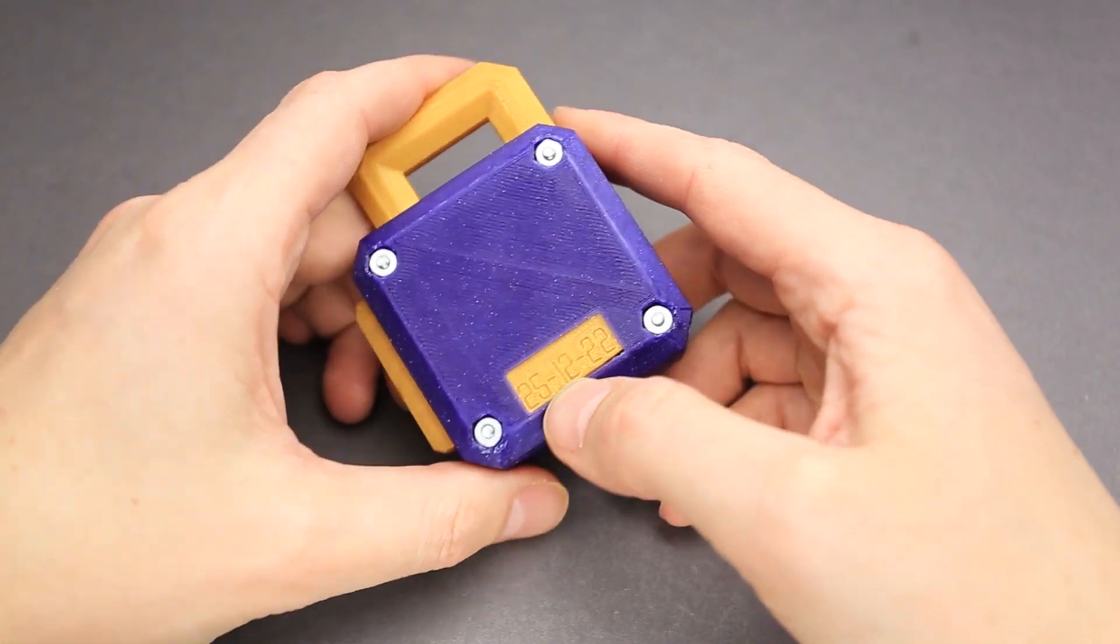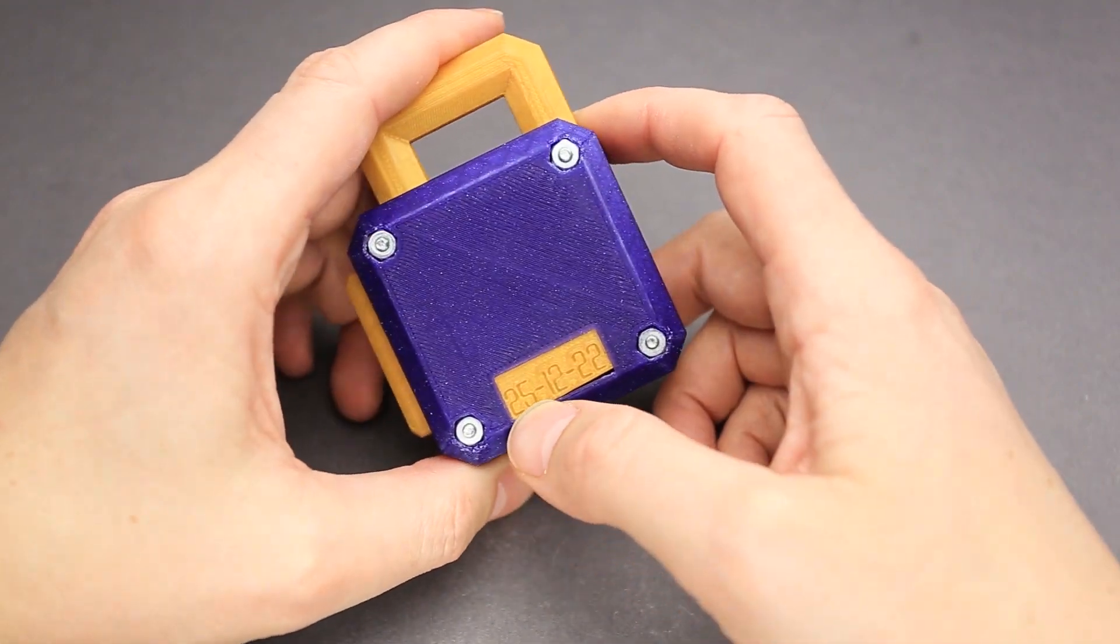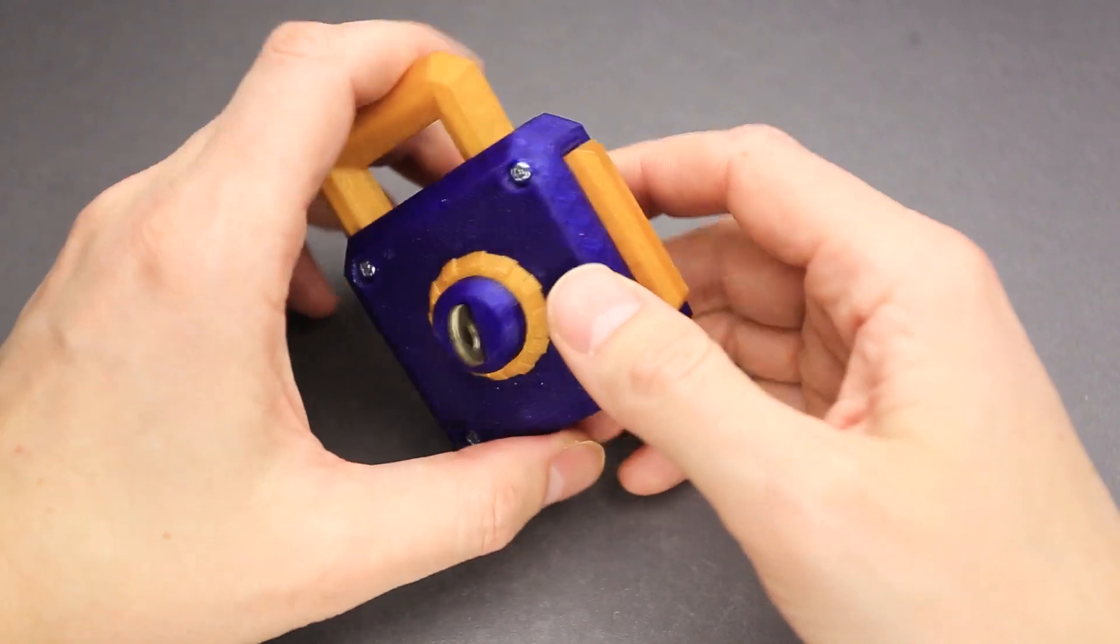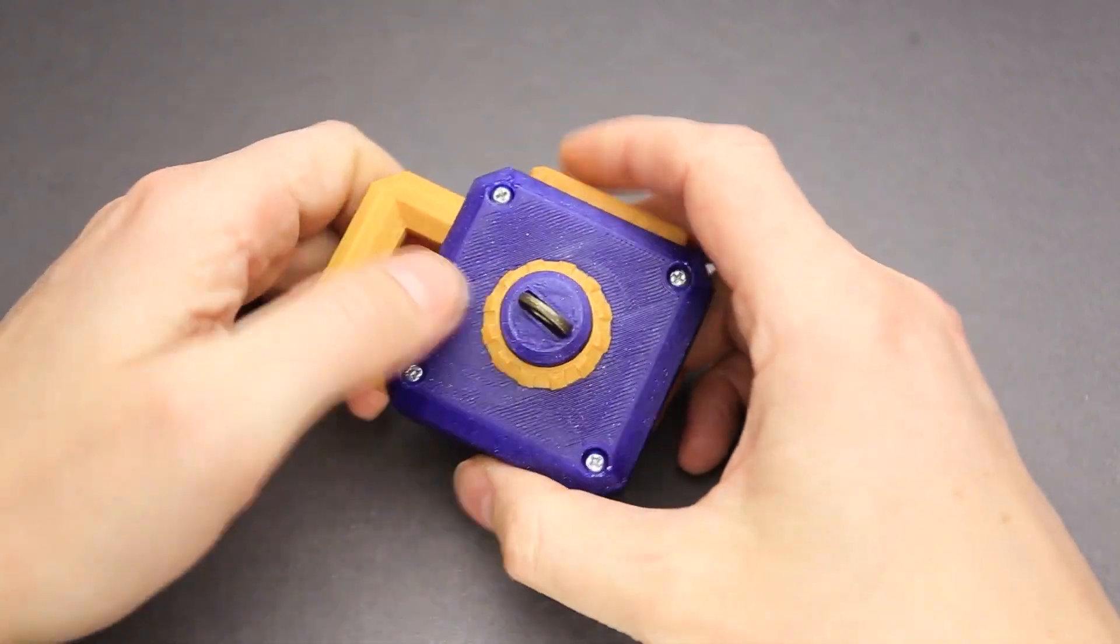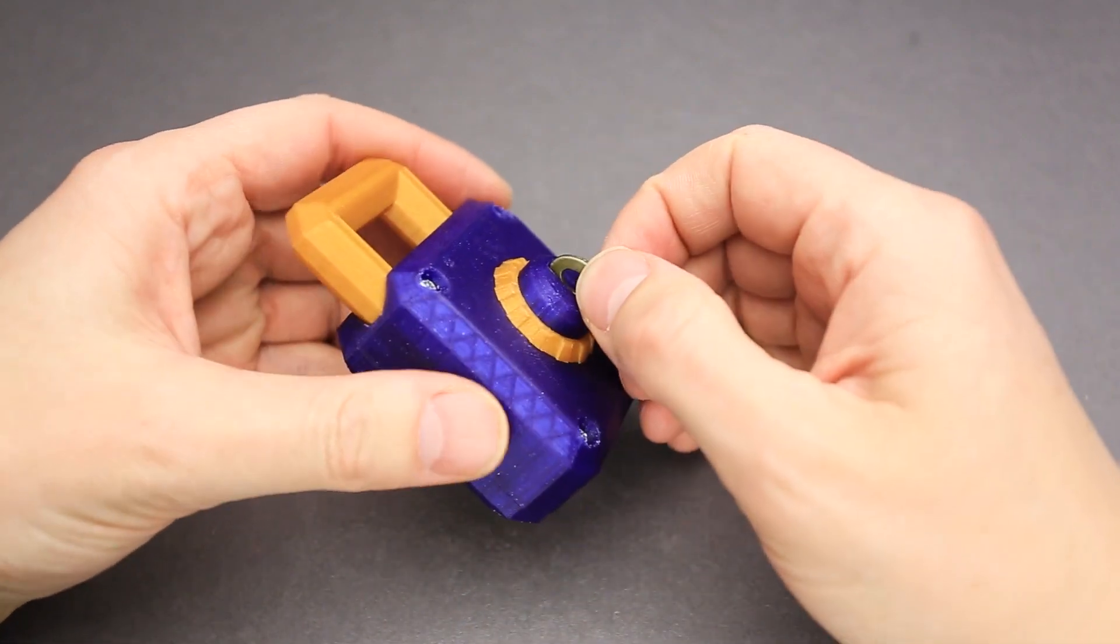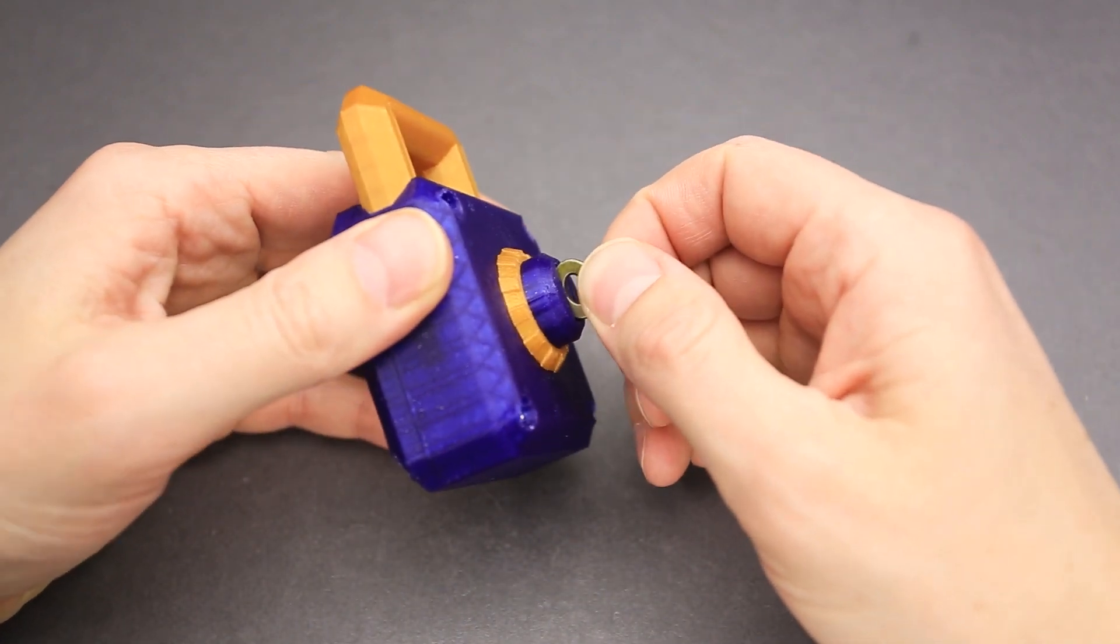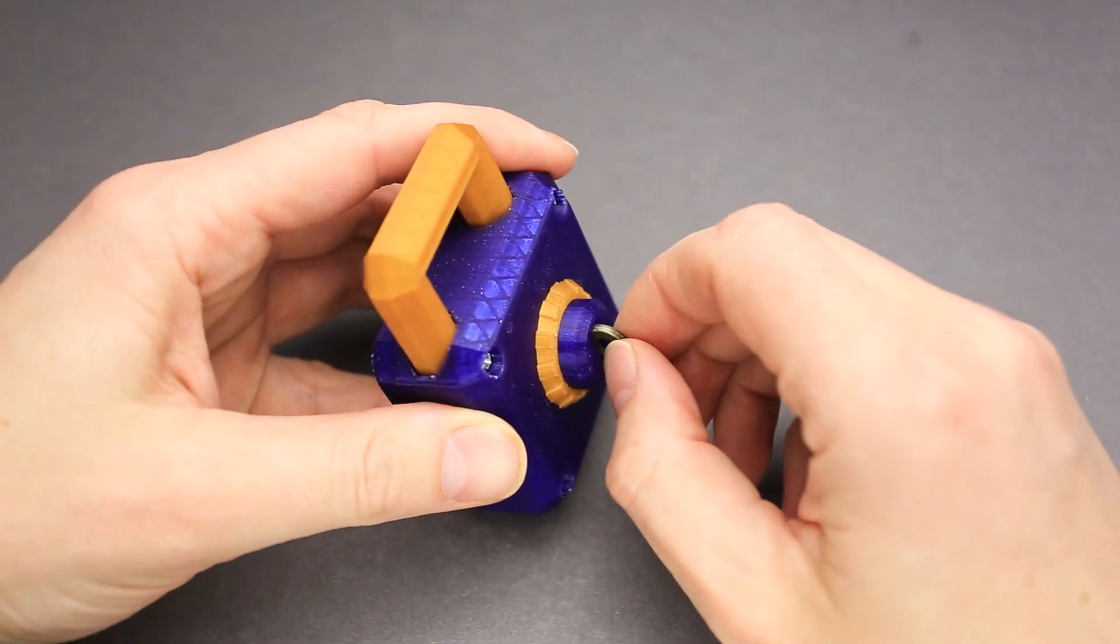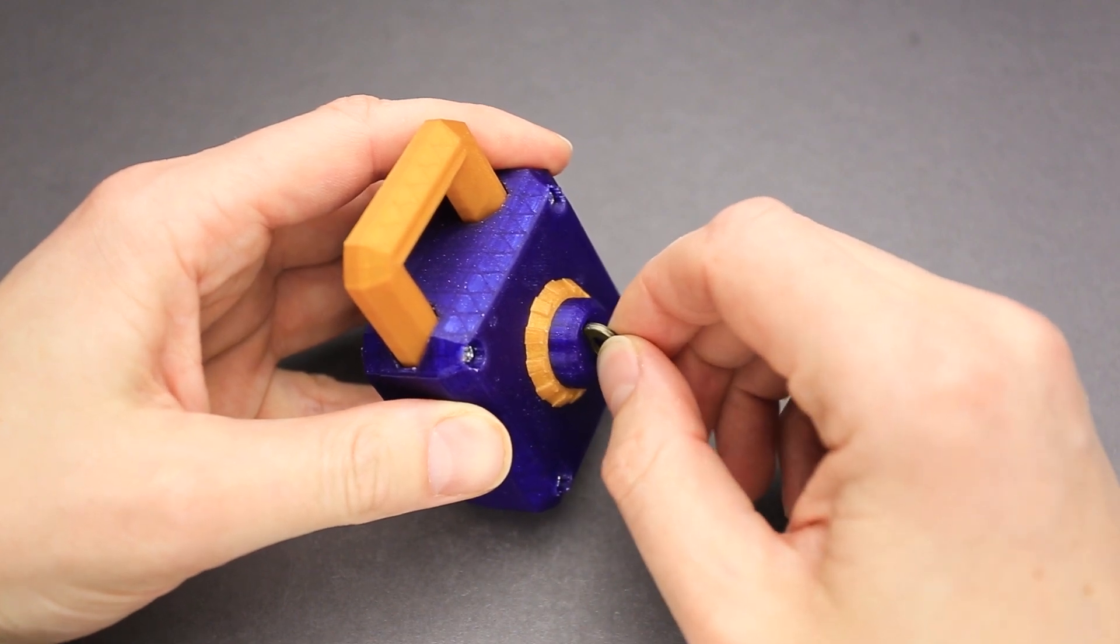There is a small plug here that says 25, 12, 22, 25th of December. There is some kind of a button here, a shackle. Oh, there is a key inside. It seems like there is a small key, but it is held by something inside. I can move it a little bit, but I can't remove it.